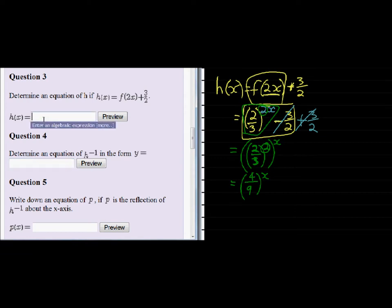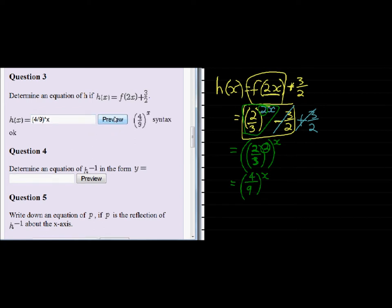So H(x) is 4 over 9. Keep the brackets because both of them get an exponent of x. Here we go.